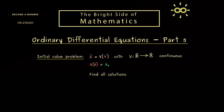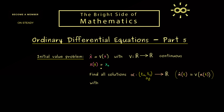Solving this initial value problem means we want to find all solutions alpha defined on some interval (t₀, t₁), where it's important that the point 0 lies inside this interval. A solution means that alpha-dot of t equals v of alpha of t for all t in the interval, and additionally we want alpha at point 0 to equal x₀.